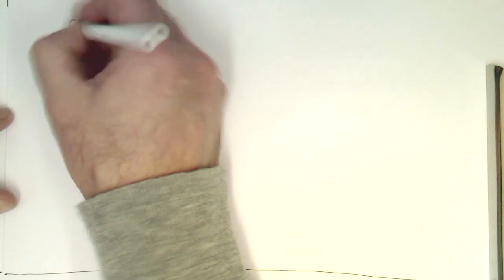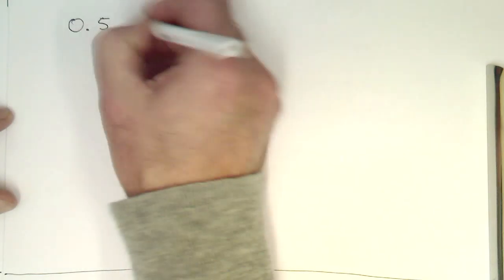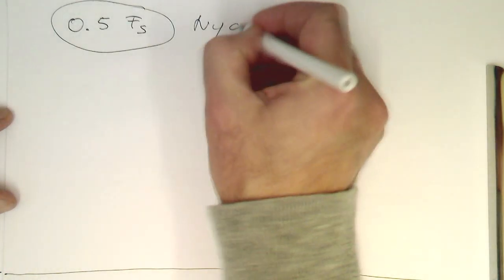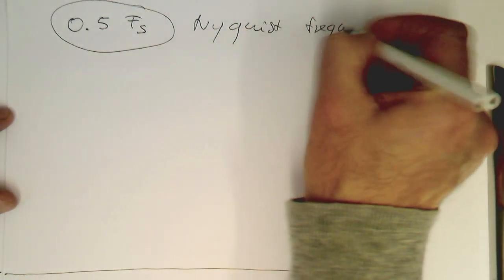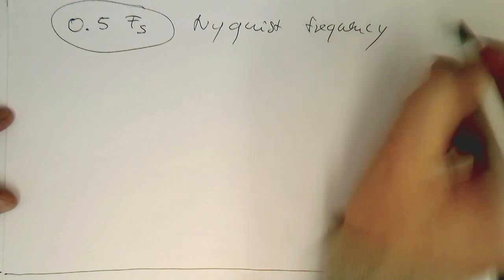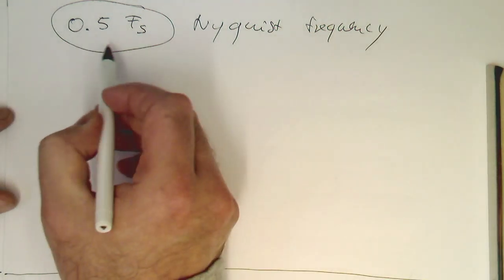Now we know that we need to limit our analog signals to half fs, so that's our Nyquist frequency. So we need to limit our analog frequencies to that.